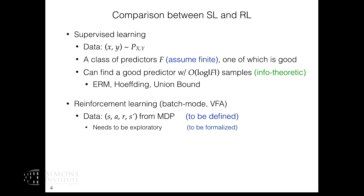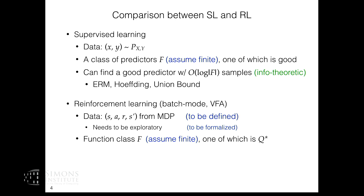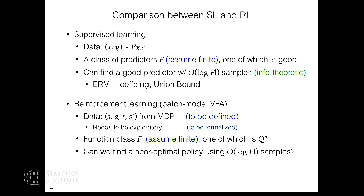One further assumption that needs to be made is that this dataset needs to be exploratory — I'll formally define what that means. Similarly, we're going to have a class of candidate value functions F. We're going to assume this is finite, and one of them is Q*, the optimal value function we want to approximate. The central question we want to answer is: under these seemingly minimal assumptions, are they sufficient for guaranteeing sample-efficient learning? By sample-efficient, I mean paying only logarithmic in |F| number of samples.